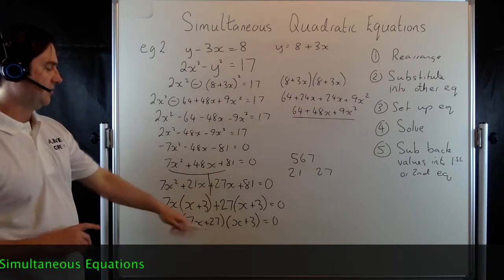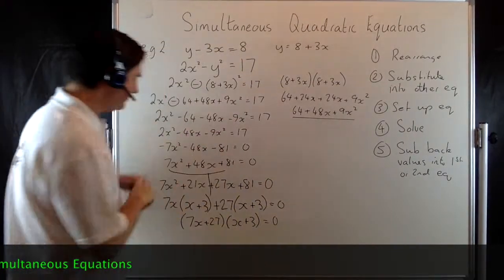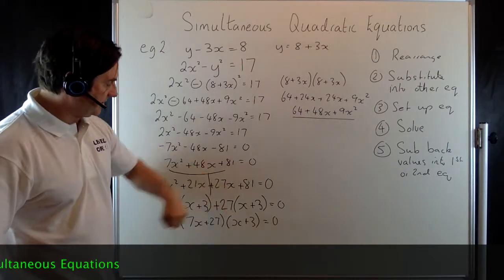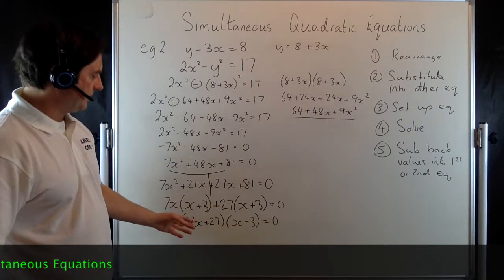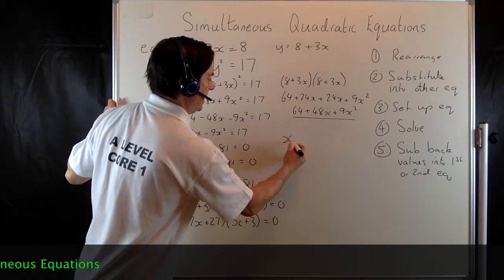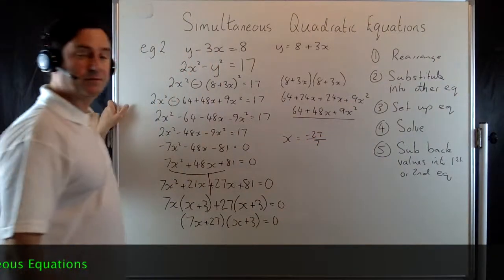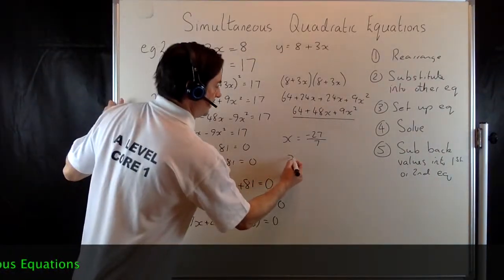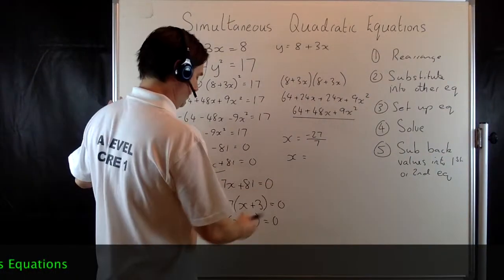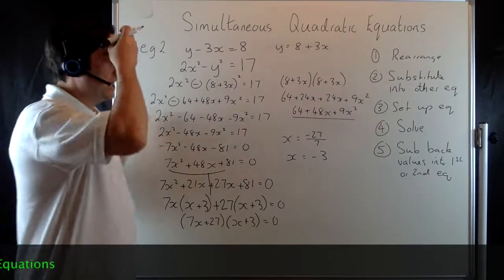I'm now going to solve these. So I've got 7x plus 27 equals 0: taking the 27 over gives 7x equals minus 27, and dividing by 7 gives x equals minus 27 over 7. And from x plus 3 equals 0, I just take the 3 over to the other side to get x equals negative 3. There are my two values for x.